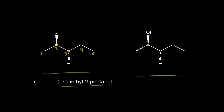Here's our carbon, and if there's an OH coming out at us in space, we know there's a hydrogen going away from us in space. Our chiral center is directly connected to a carbon on the left, and this carbon is bonded to three hydrogens. Our chiral center is also directly bonded to a carbon on the right, which is directly bonded to another carbon, another carbon, and there must be a hydrogen coming out at us in space.